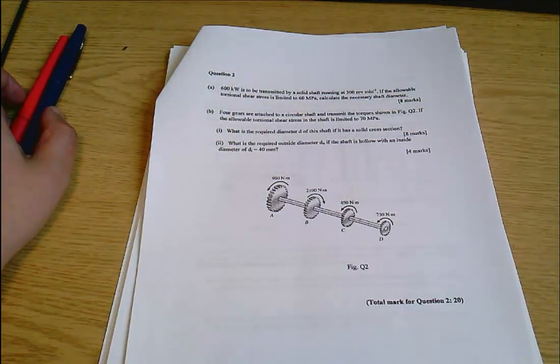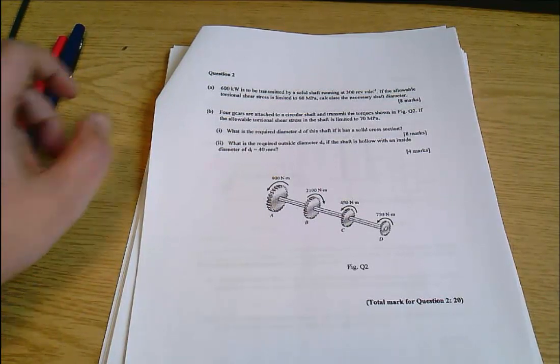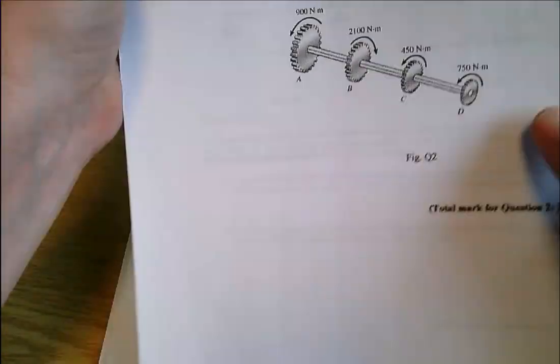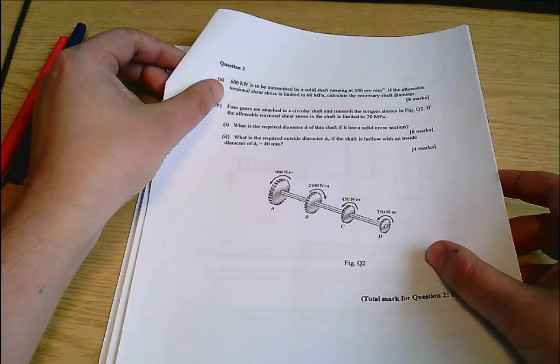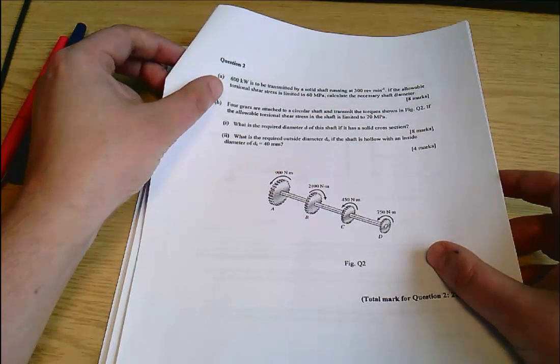This is a Solid Mechanics Eng 5443, the 2018 exam, and I'm looking at question 2 which is on torsion. Part 2A is about a solid shaft transmitting 600 kilowatts at 300 rpm with a maximum shear stress of 16 megapascals, and it wants us to find the shaft diameter.